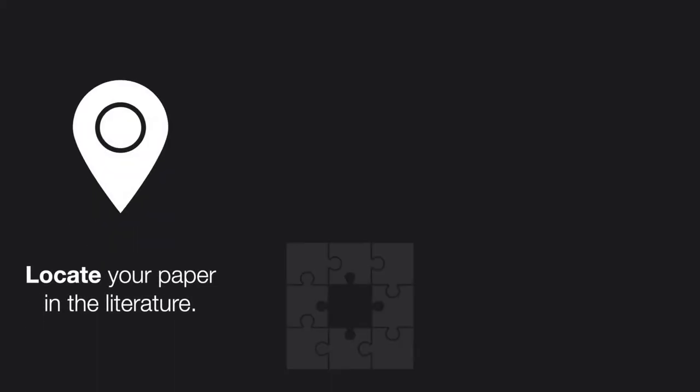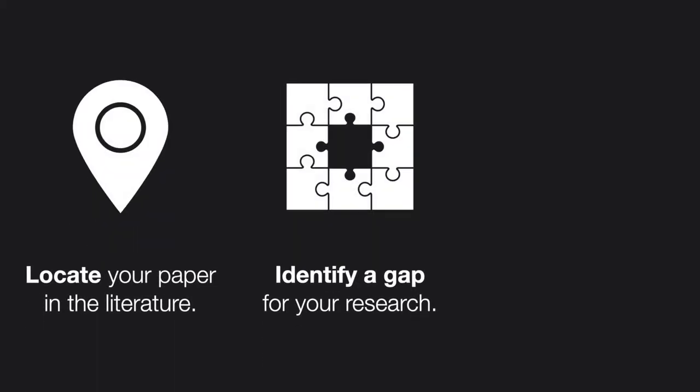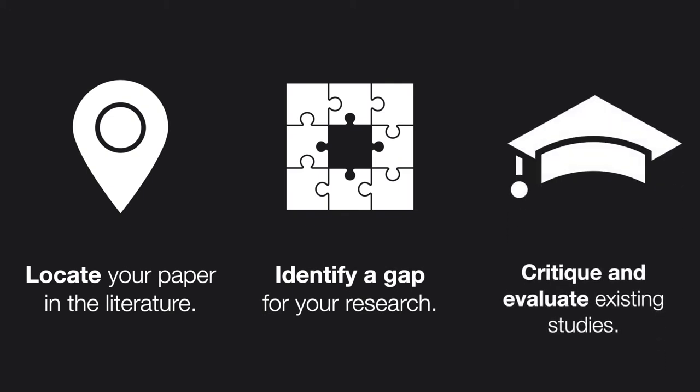A lit review has three basic functions: to locate your own research in a broader field of study, to identify a gap where your research fits, and to critique and evaluate existing studies that have done similar work or investigated a similar field.